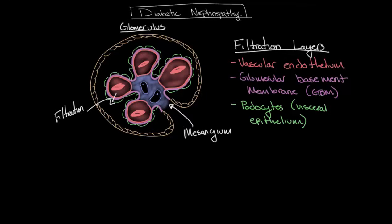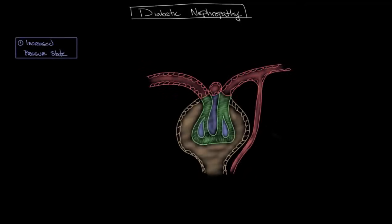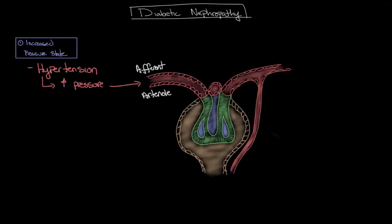So how exactly does diabetes — a problem with insulin deficiency — result in kidney damage? The answer includes multiple compounding factors. The first component is an increased pressure state within the nephron, due to two mechanisms. The first is hypertension, which is a common comorbidity associated with diabetes mellitus. Hypertension, or high blood pressure, results in increased pressure throughout the entire arterial vascular system, including the afferent arteriole of the glomerulus.